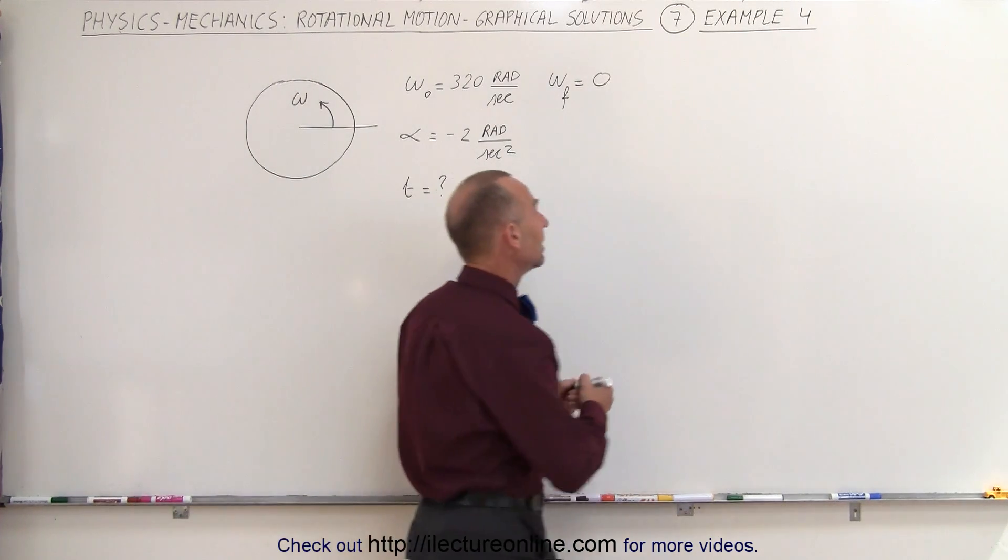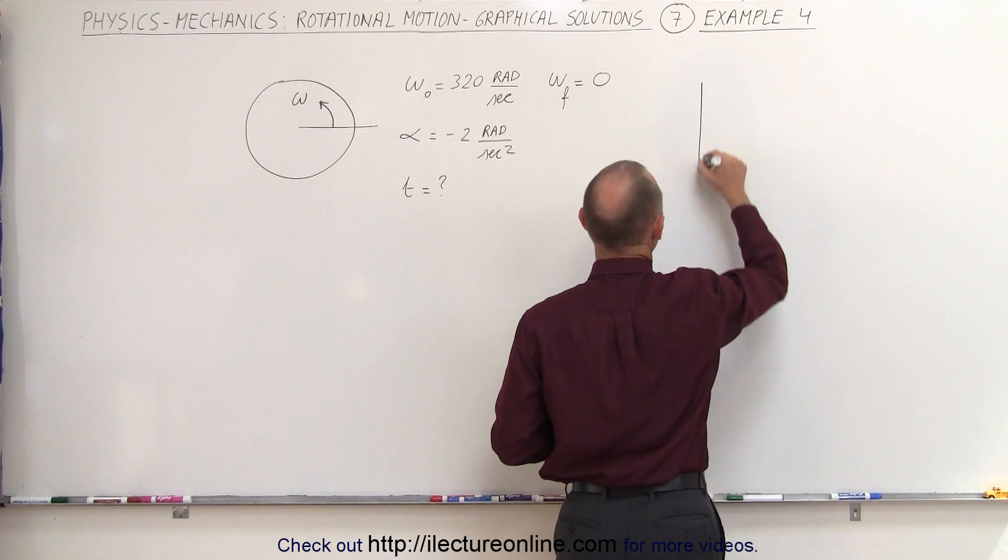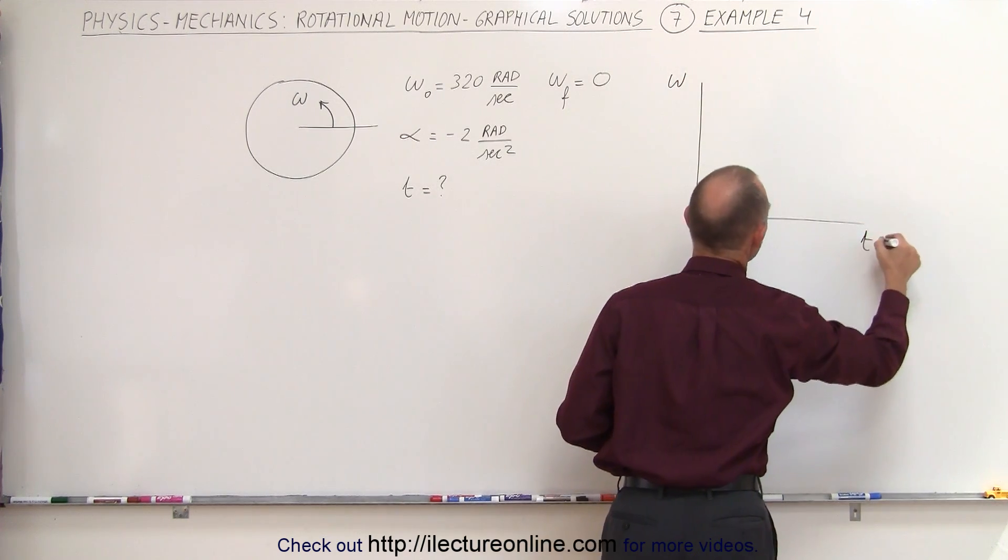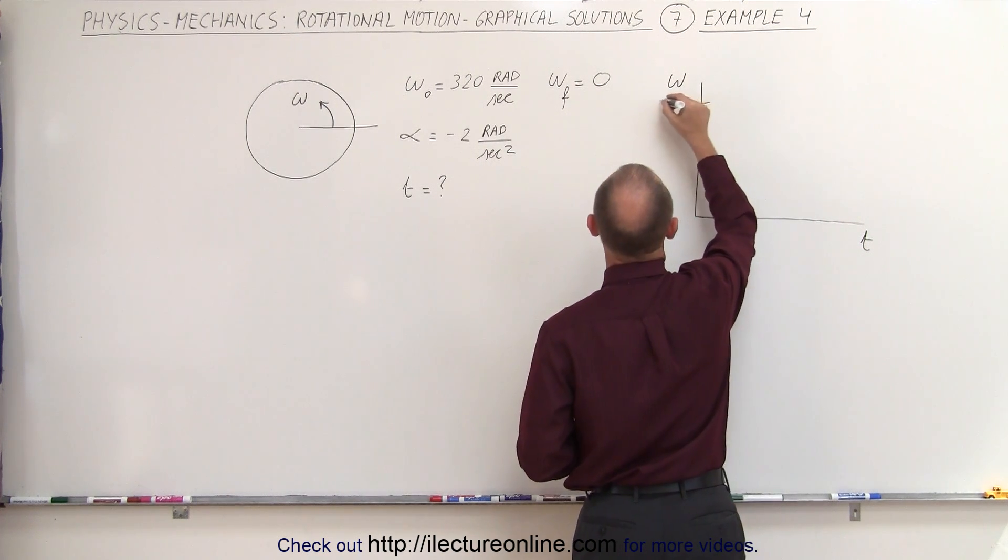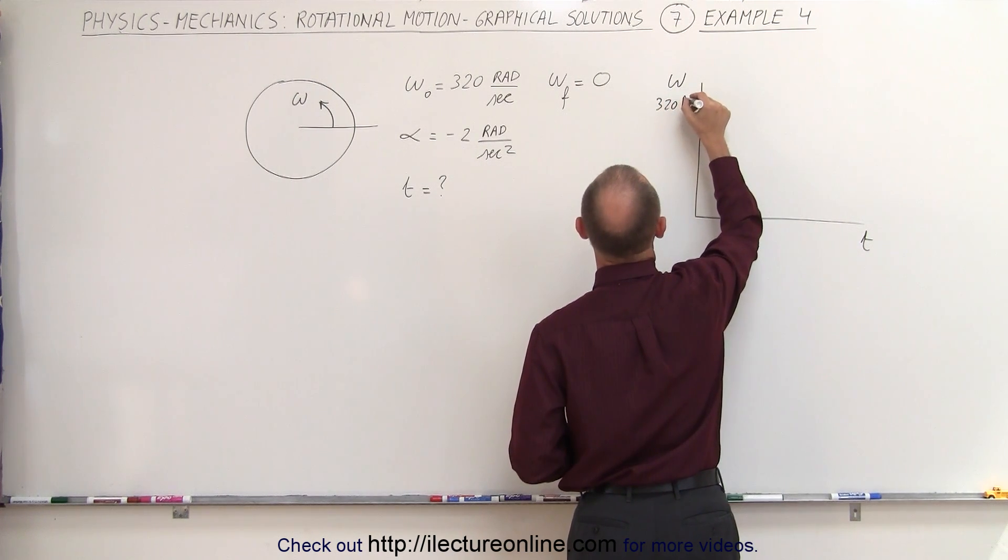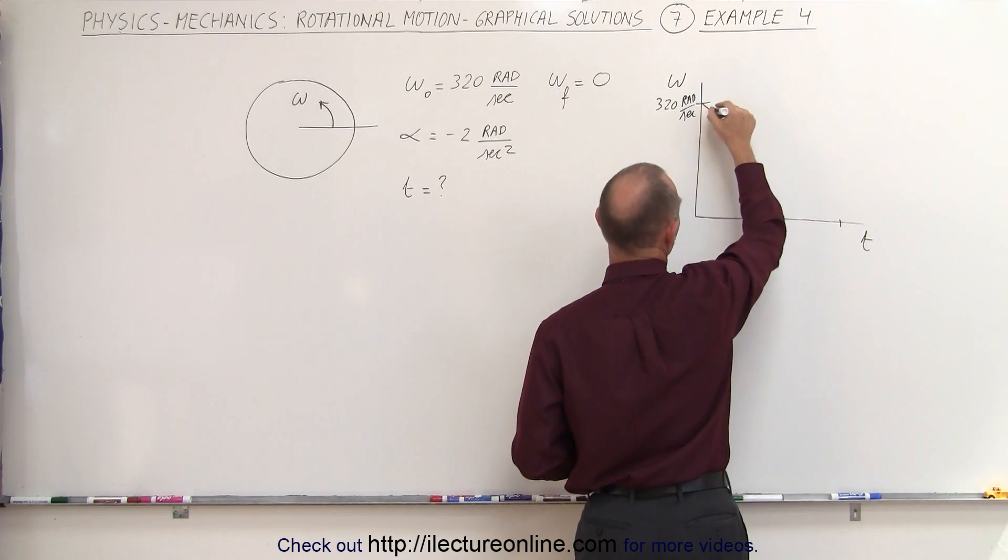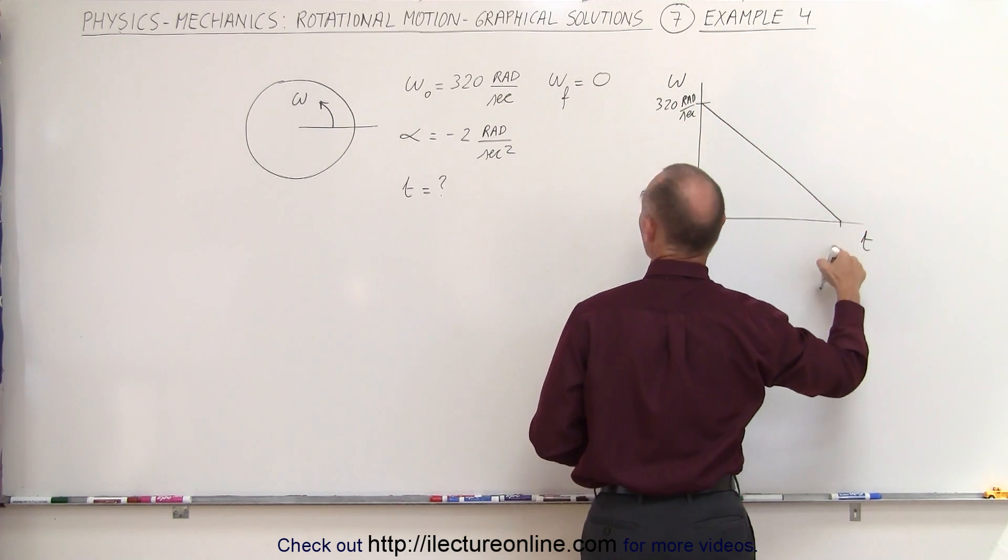Well, again, using graphical techniques, we're going to draw a graph where we graph omega versus time, and we start off with initial omega of 320 radians per second, and we go down to 0, like this, and the time elapsed.